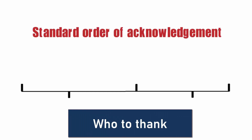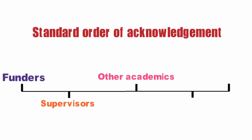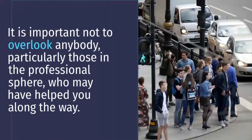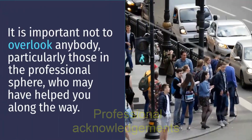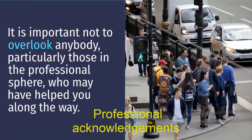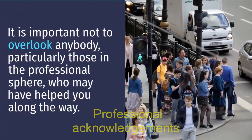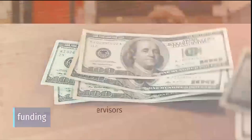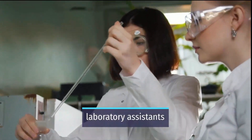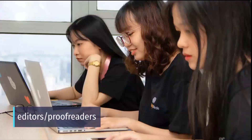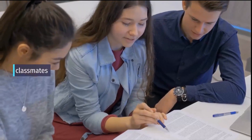Usually, you should only mention those who directly supported you during your dissertation. Professional acknowledgements include funders, supervisors, other academics, colleagues, family and friends. It is important not to overlook anybody, particularly those in the professional sphere, who may have helped you along the way. You should mention the members of academia and funders who contributed to your research. This might include funding bodies, supervisors, professors, laboratory assistants, librarians, colleagues, editors, proofreaders, classmates, and research participants.